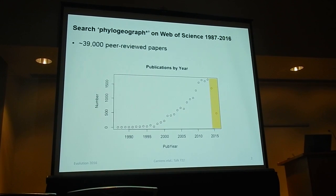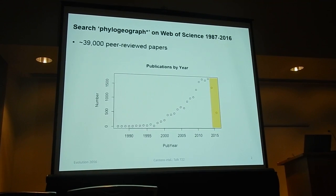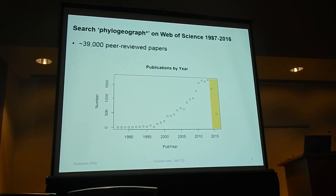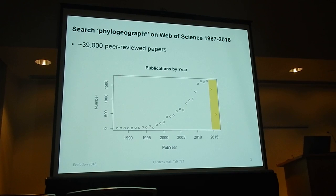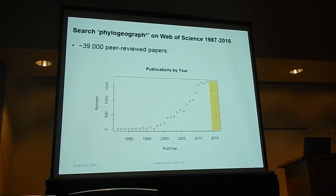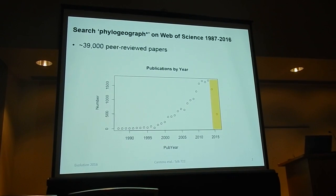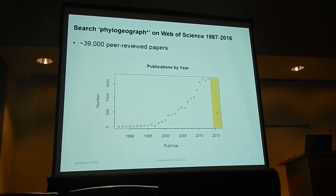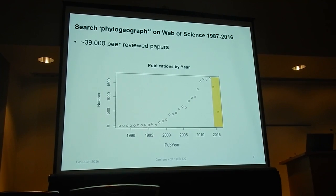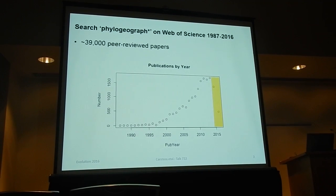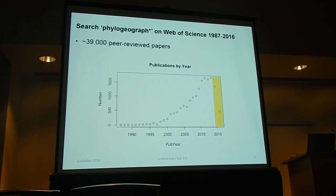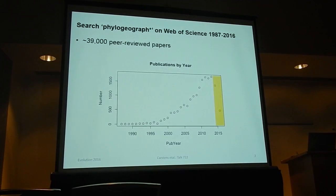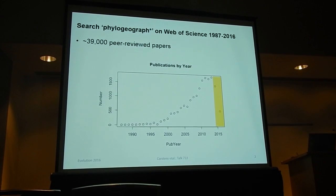Phylogeography is not cratering right now — this is a lag time effect where it takes a while to get citation metrics into Web of Science. There are a lot of papers that have been published collectively, and every year we have more and more. These are all really potentially useful data for people interested in biodiversity questions, and what we're really trying to do is figure out how to use these data in larger analyses.